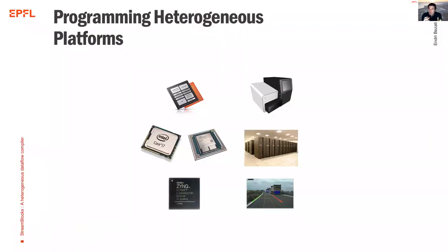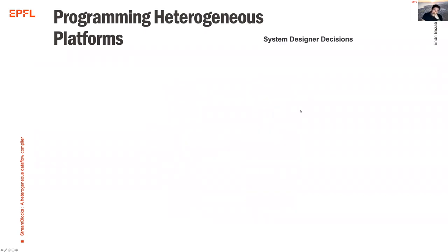Heterogeneous platforms come in many different forms. We can see them as a small embedded device or a very large embedded device like a DNA sequencer, which has different processing elements inside — a CPU, GPUs, a cluster of computers containing CPUs and FPGAs, or system-on-chip devices like the Zynq for autonomous driving. The question is, how do you program such heterogeneous platforms?